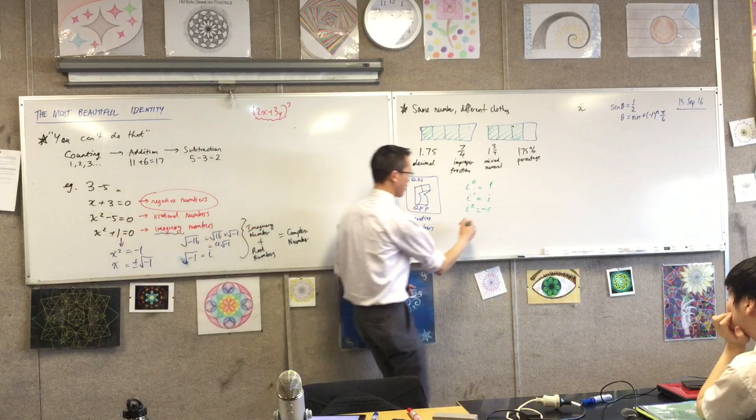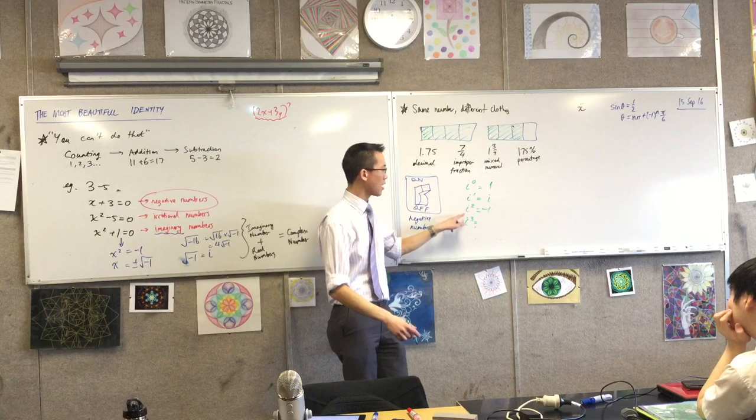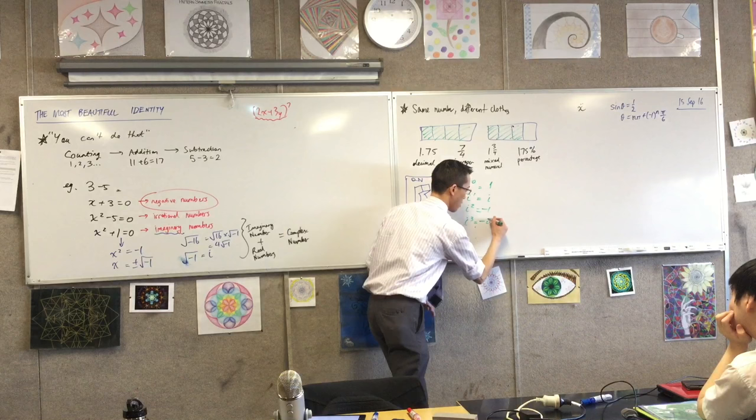Keep going. i cubed. So i cubed is i squared times i. So it's negative one times i. Negative i. Does that make sense?